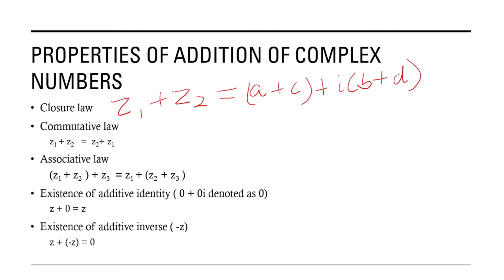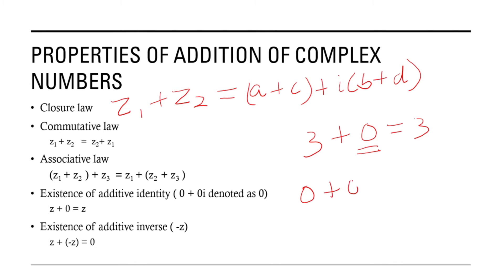The next one is the existence of additive identity. We know that in the real number system the additive identity is 0 — when we add the additive identity to any number we get the same number. For example, 3 plus 0 equals 3. Similarly, in complex numbers the additive identity is denoted as 0 or 0 plus 0i. When we add any complex number to 0 plus 0i we get the same complex number.